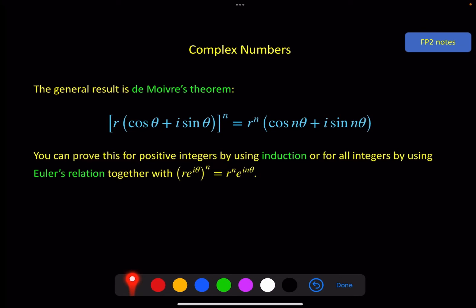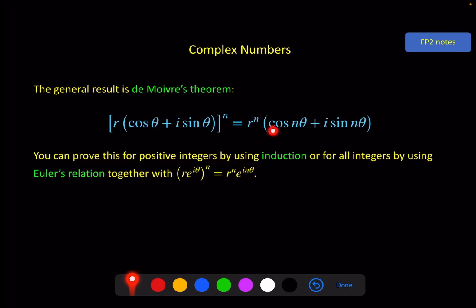You can prove this for positive integers using induction, which we'll do in the final example, or you can prove it for all integers using Euler's relation together with the result from the starter question. Basically, you put the exponential form in, use the work from the starter to simplify, and then convert back into cos + i sin form.